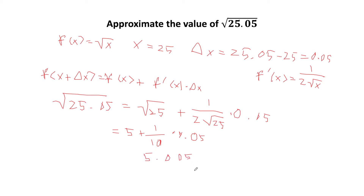If we actually take the square root of 25.05, we get 5.004998, which is really close to our approximation of 5.005. This shows the validity of these approximations.